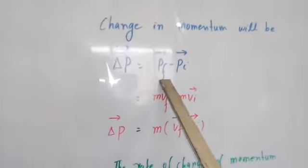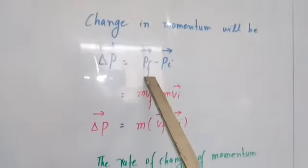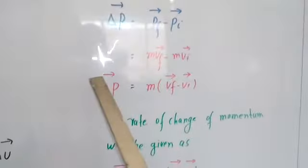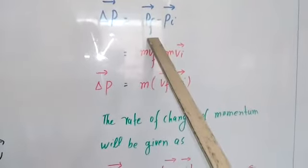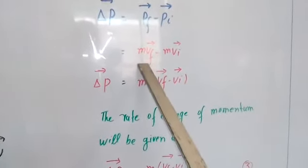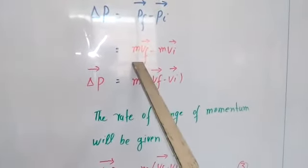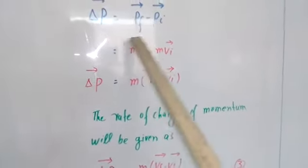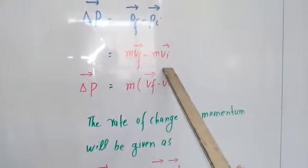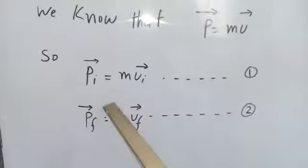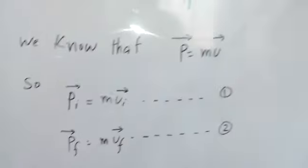तो उसको हम delta P से लिखते हैं क्योंकि यह momentum में change है। Velocity में होगी तो delta V से लिख देंगे। अब मैंने P_f की जगह पे MV_f और P_i की जगह पे MV_i रखा — यह values हमने इन दो equations से put कीं।